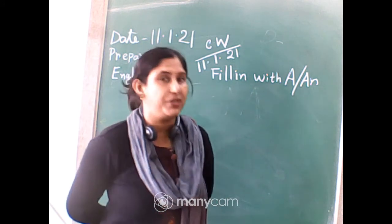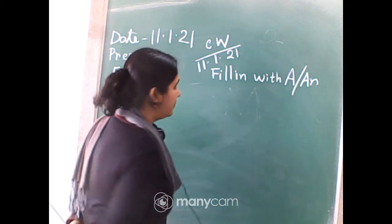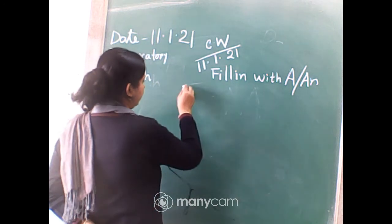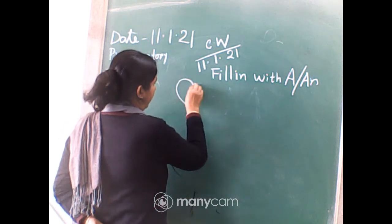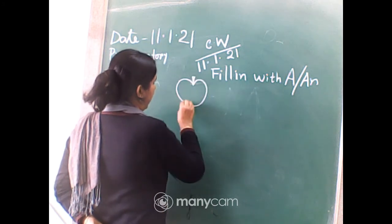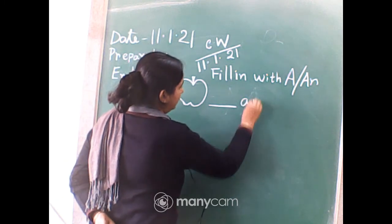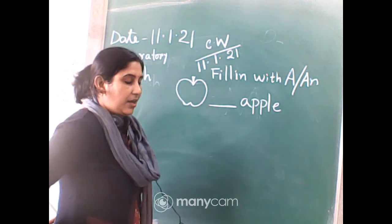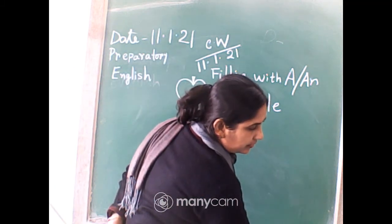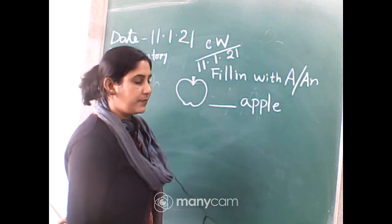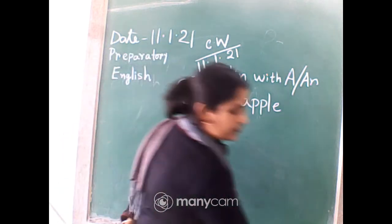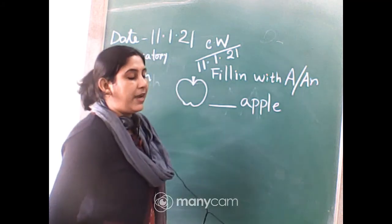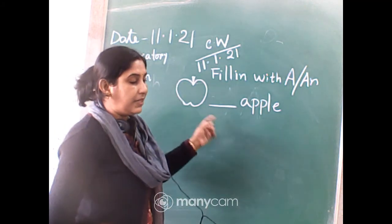Now I will give you some pictures and you will do that one. Write down: dash apple. You will put here A or AN. What will be the answer?